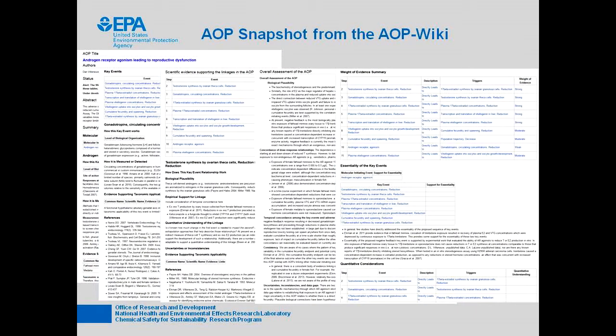Once you have the information in the wiki, we're working on mechanisms to create a snapshot, which would create a printed document following the OECD handbook. This is how the OECD process will work — they will review one of these frozen snapshots so that the information content in the wiki doesn't have to be frozen. The goal for the wiki is that it will be a dynamic, continually updating source with always the latest information. Periodically, if a governing body wants to endorse an AOP, they will pull out a snapshot to endorse. We're also working on features so you can quickly determine differences between any given snapshot and the current AOP.